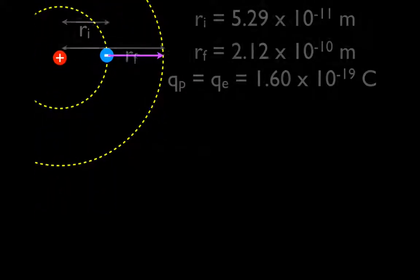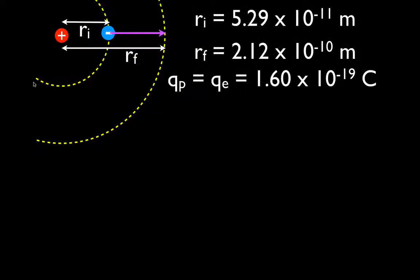Here we have a model of our hydrogen atom. In the nucleus, there is a single proton. Orbiting the nucleus, there is a single electron for a neutral hydrogen atom. The distance from the nucleus — from the proton — to the first energy level is ri, that's our initial distance. We're going to move it from the first energy level to the second energy level, rf.